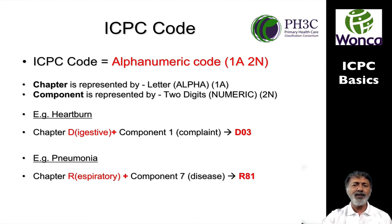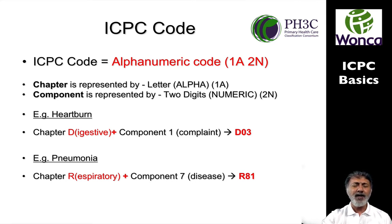The component is represented by the two digits — the two numbers — that are implicit in that they are in different ranges. So you might have a particular problem, like a particular complaint like heartburn, that's then coded by saying it comes from the digestive system. So D is the first alpha, and then in component one you look at where it falls in the 01 to 29 range.